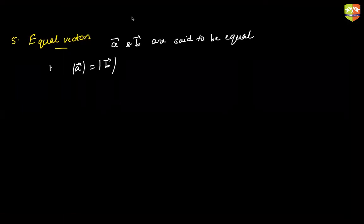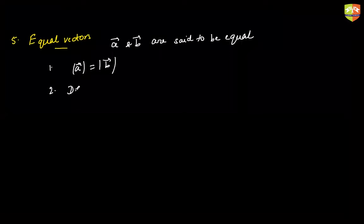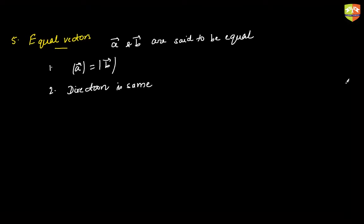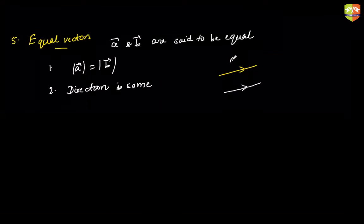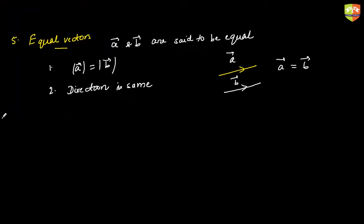Two vectors are equal when their moduli are the same and their sense — direction — is also the same. For example, if vectors A and B have the same length and same direction, then vector A equals vector B.